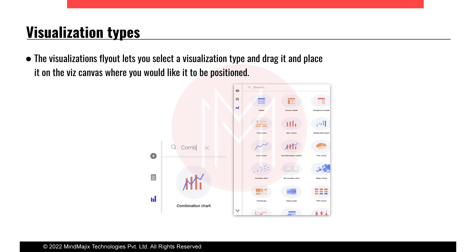The first visualization type is the table, which shows the rows and columns of your data from sources like Snowflake, Oracle, or any other data source. The second is the cross table, used when you want to show sum of rows, sum of columns, grand totals, or subtotals. The third is the graphical chart, which shows bullet graphs, icons, and calculated values. Use it when you need to portray that type of indicator data.